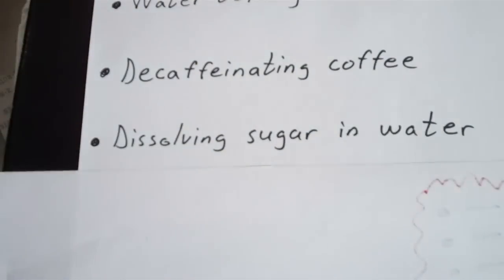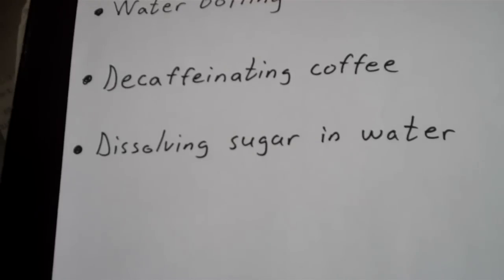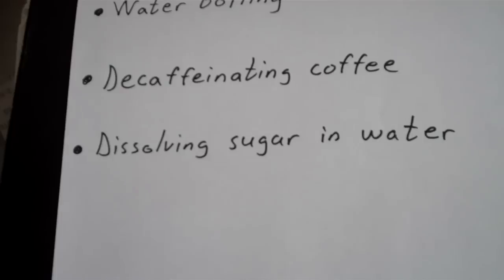And lastly, dissolving sugar in water — physical or chemical change? This one's pretty tricky. You have to ask yourself: are the individual molecules changing their composition and becoming other molecules? The answer is no. When you dissolve sugar in water, each sugar molecule becomes surrounded by water molecules, but the molecules themselves still remain intact. Therefore, dissolving sugar in water is a physical change — excuse me, it's a physical change. Sorry about that.